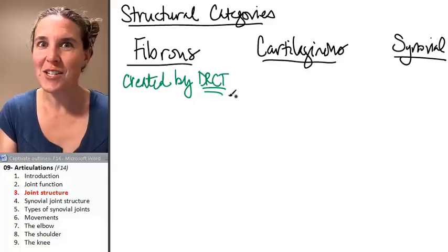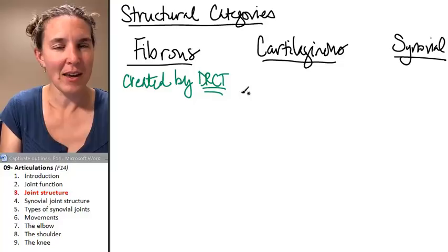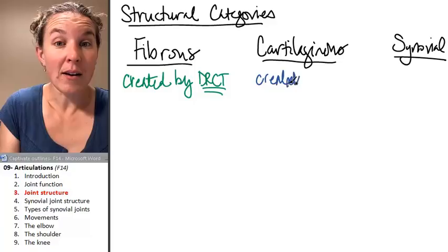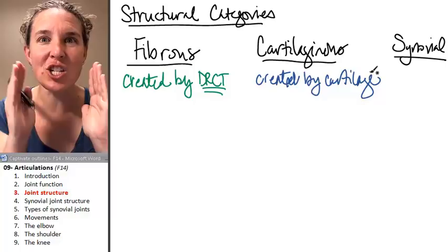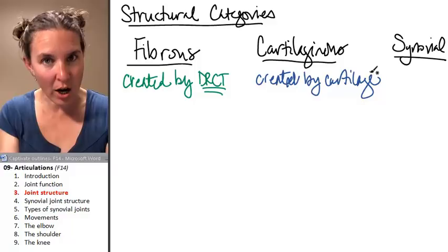What do you suppose all cartilaginous joints have in common? They are created by cartilage — might be different flavors of cartilage, but cartilage connects cartilaginous joints. So two bones that are connected by cartilage of some flavor are cartilaginous joints.